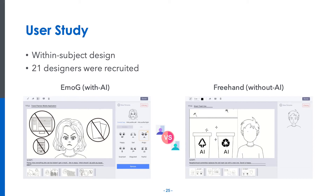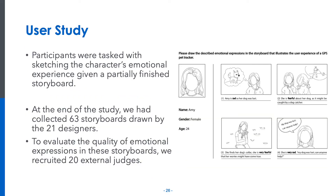To evaluate the effectiveness of Emoji, we conducted a within-subject user study with 21 designers. We compared Emoji to a baseline of the same functionality but without AI. In the baseline system, freehand, participants drew a face of an intended character and his or her emotional expressions without AI assistance. In each task, participants were provided with a partially finished storyboard which intentionally left the character's face blank, and were asked to draw the face and sketch emotional expressions in each frame. We limited the topics, scripts, and number of frames in each storyboard. At the end of the study, we had collected 63 storyboards.